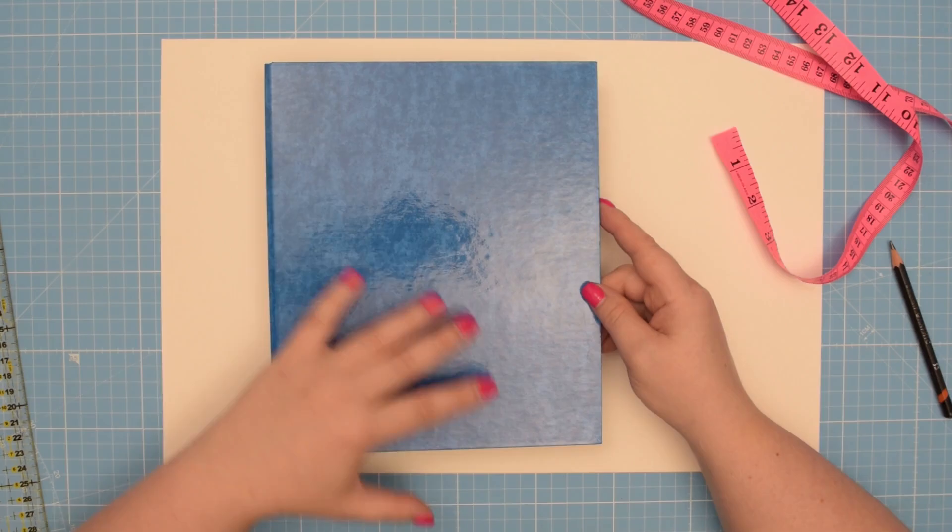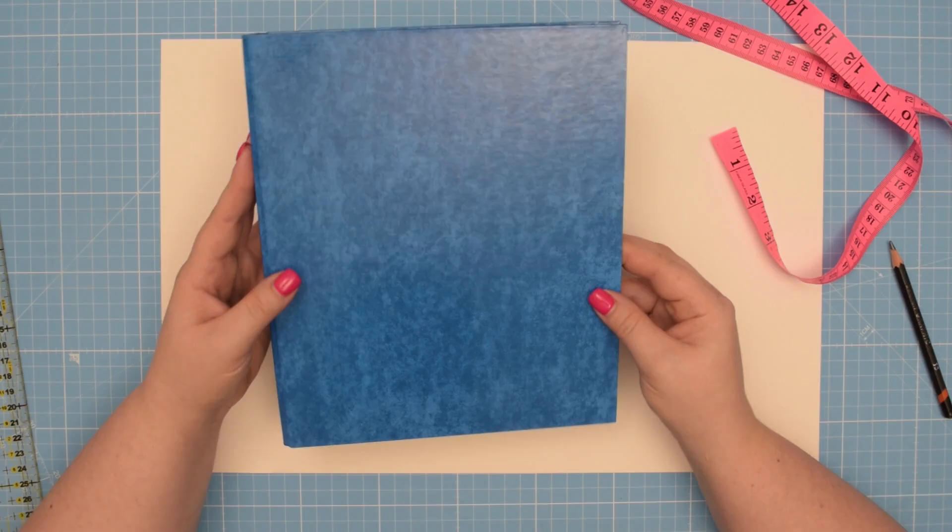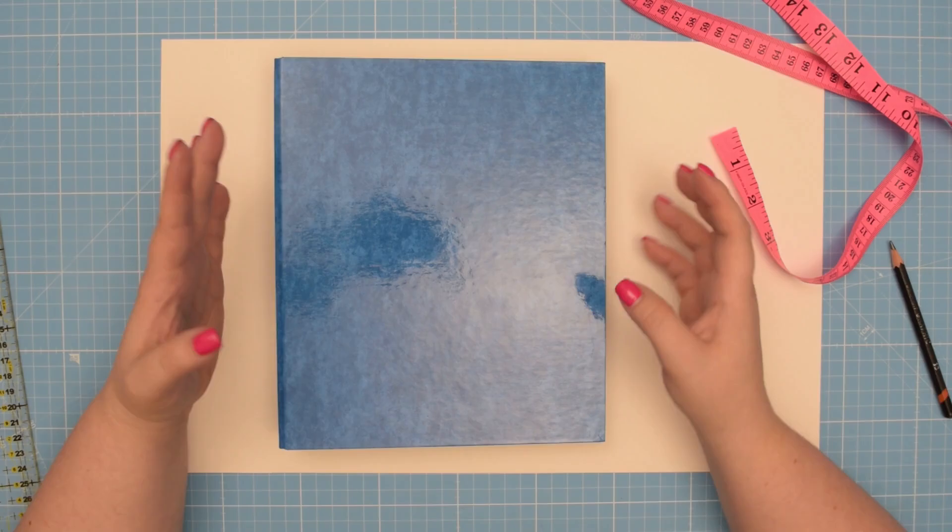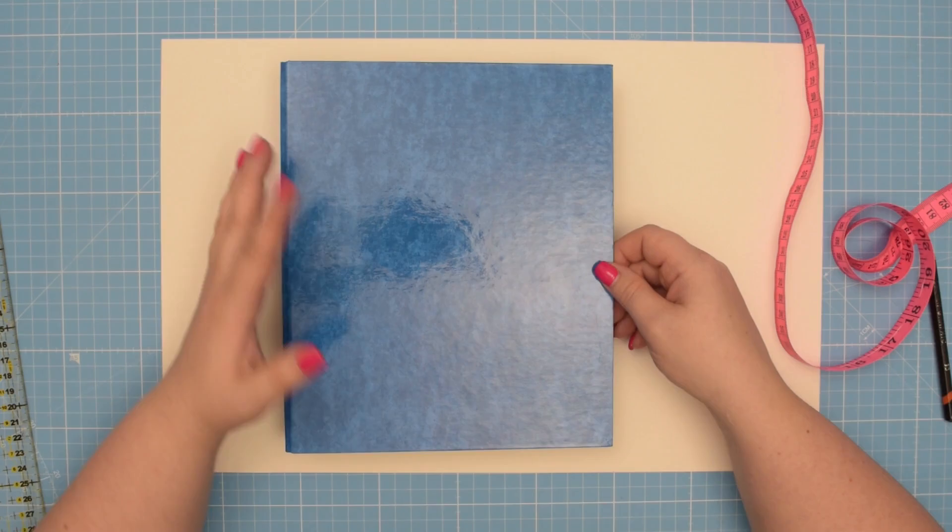The process of drafting the pattern pieces for your binder cover is exactly the same regardless of the size of your binder. I have a small A5 binder today, but if your binder is A4 or maybe letter size, you need to follow the exact steps.